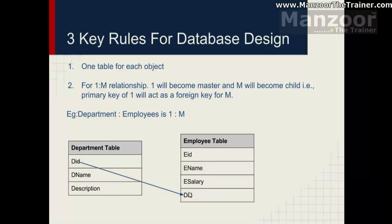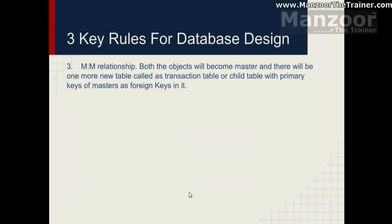The third rule is for many-to-many relationships. In this case, both objects become parent tables and they give birth to a new child table, called a transaction table. For example, student and course: one student can opt for multiple courses, and one course can be opted by many students — this is a many-to-many scenario.